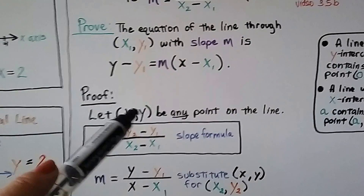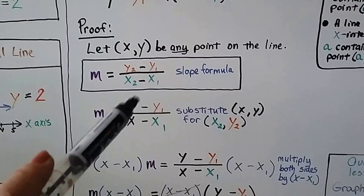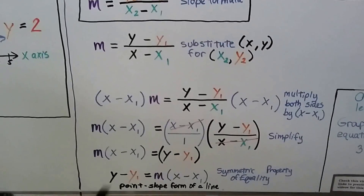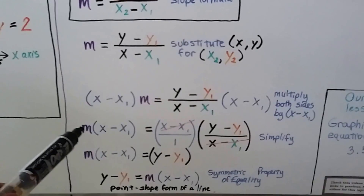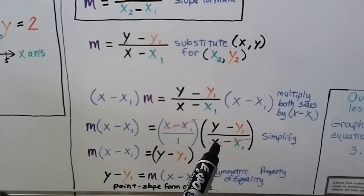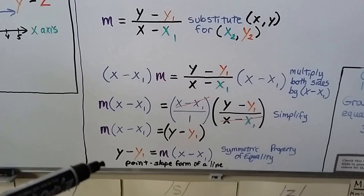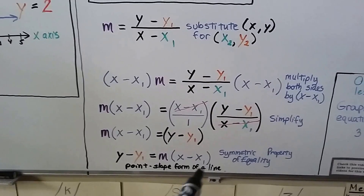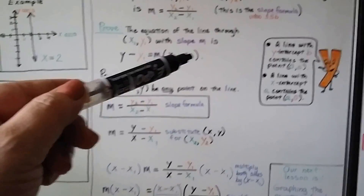Here's our proof. We let x and y be any point on the line. Starting with the slope formula, we substitute x and y in for x sub 2, y sub 2. Then we multiply both sides by x minus x sub 1. On the right side, we rearrange and put m in front. On the left side, the x minus x sub 1 terms cancel, leaving y minus y sub 1. Using the symmetric property of equality, we now have point-slope form of a line: y minus y sub 1 equals m times x minus x sub 1.